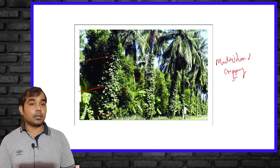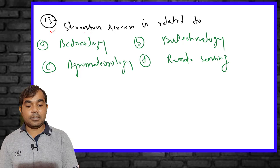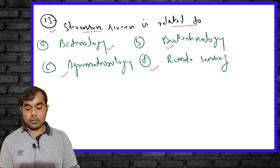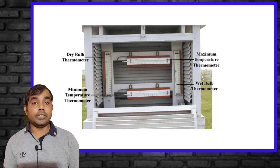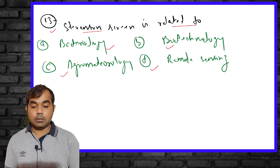The thirteenth MCQ asks: Stevenson screen is related to which field — bacteriology, biotechnology, agriculture, agrometeorology, or remote sensing? The Stevenson screen contains a dry bulb thermometer and minimum temperature thermometer and is used for relative humidity measurement. Therefore the right answer is agrometeorology.